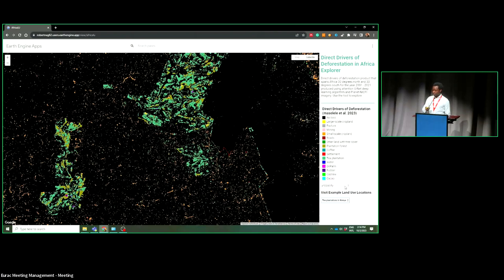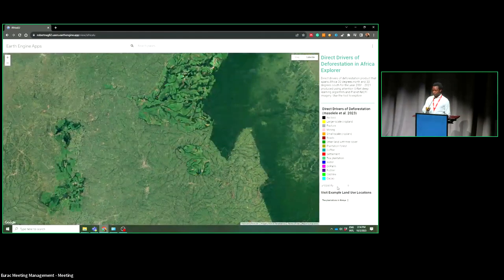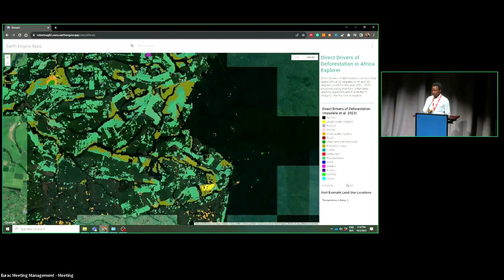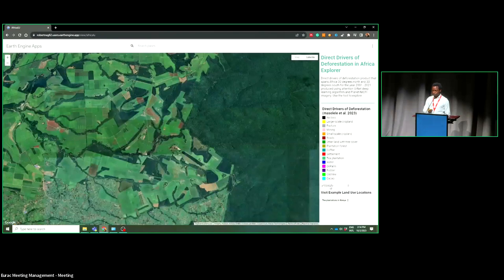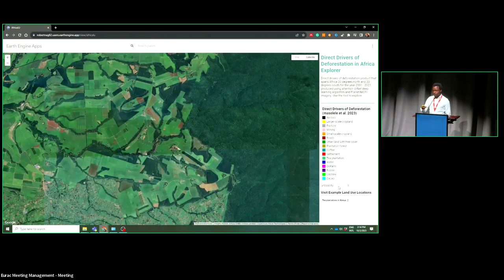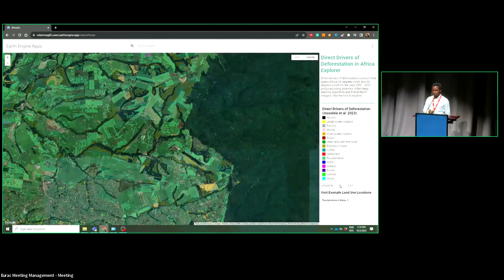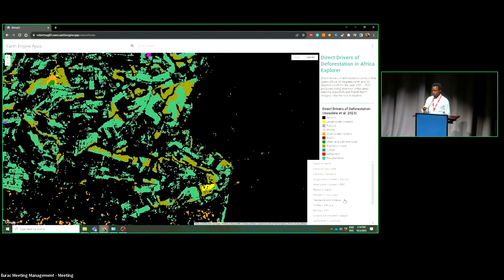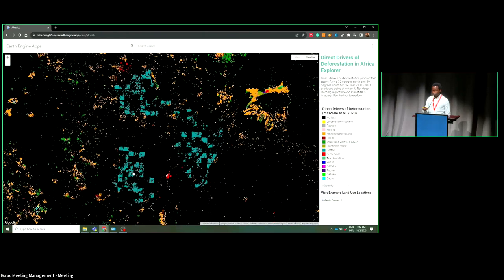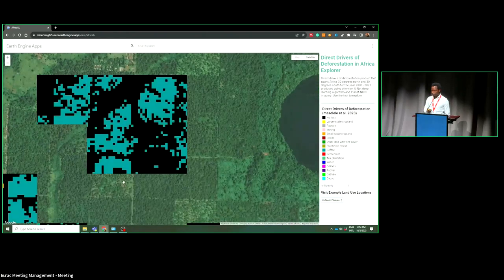We also identify tea in Kenya. You can see tea plantations just at the border with the forest. And if you see the changes over time, it's increasing towards the forest. This also poses a risk to existing forest because at some point, this forest is going to be even more deforested.